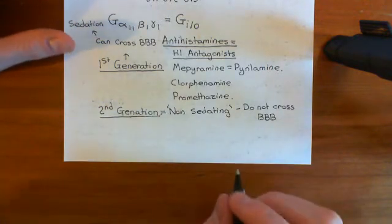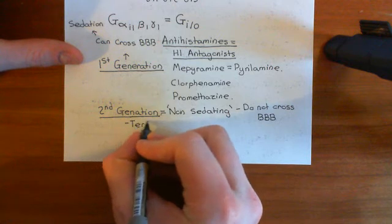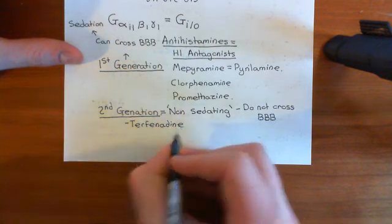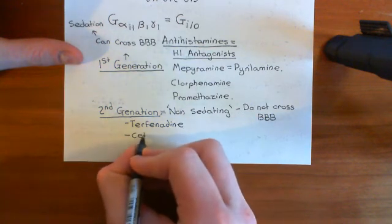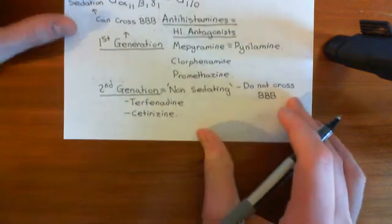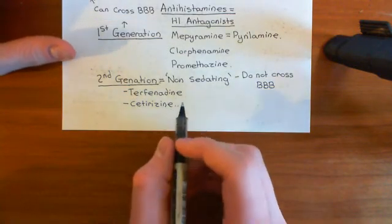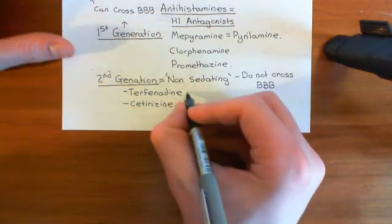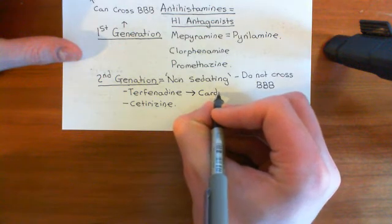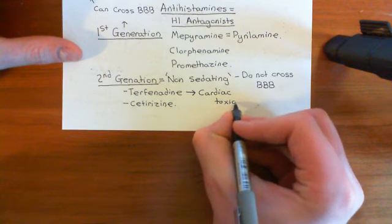Examples of second generation antihistamines would be terfenadine and also cetirizine. Cetirizine is commonly used for hay fever as an anti-inflammatory. Terfenadine is no longer used, and the reason is that it causes cardiac toxicity — it can propagate dysrhythmias, which is obviously a big problem.